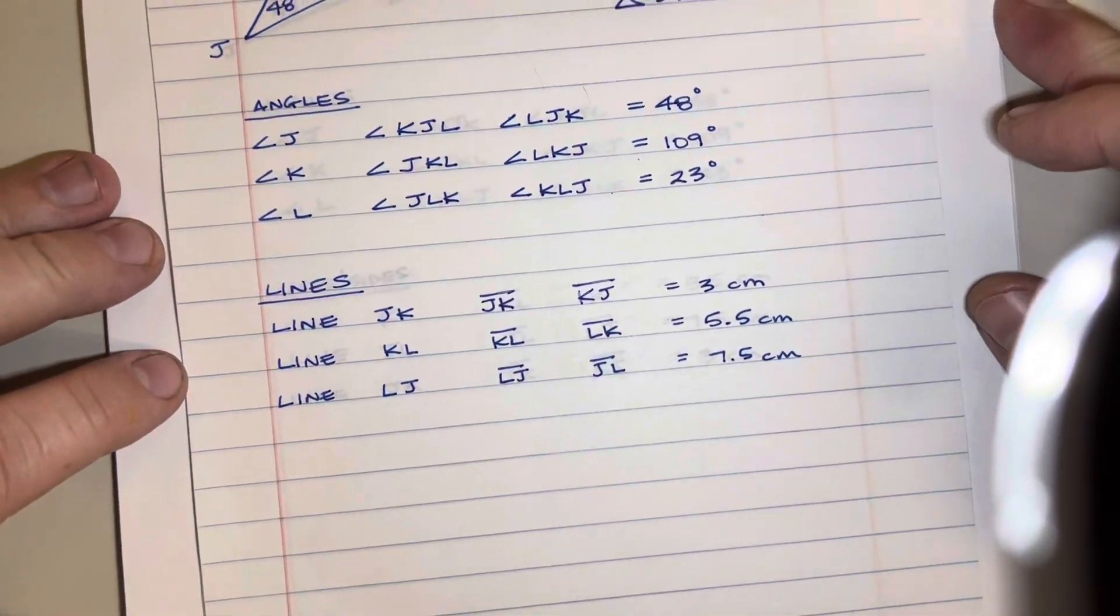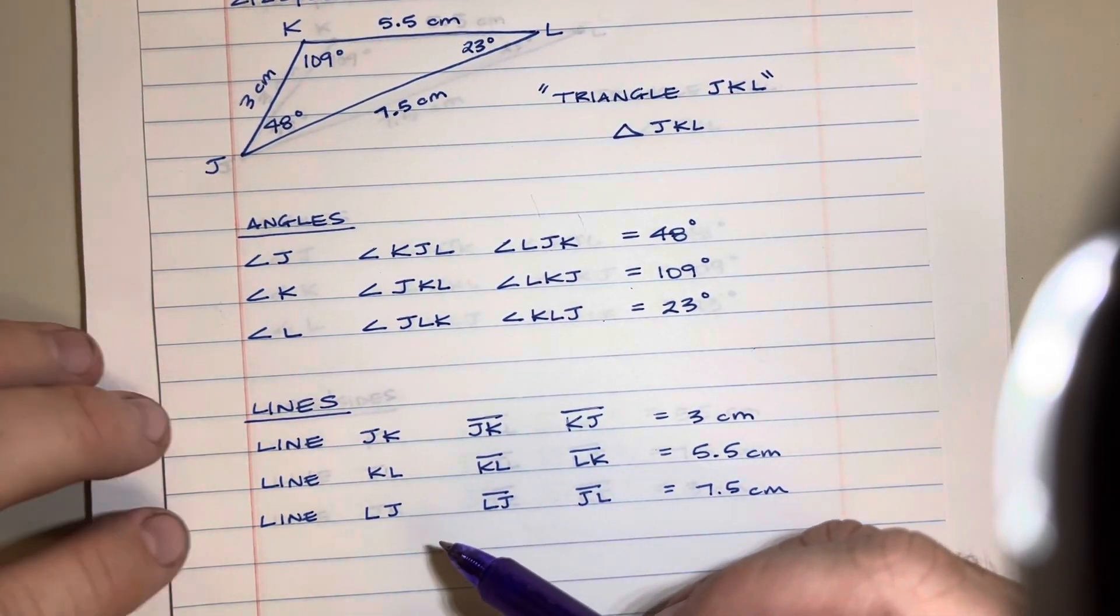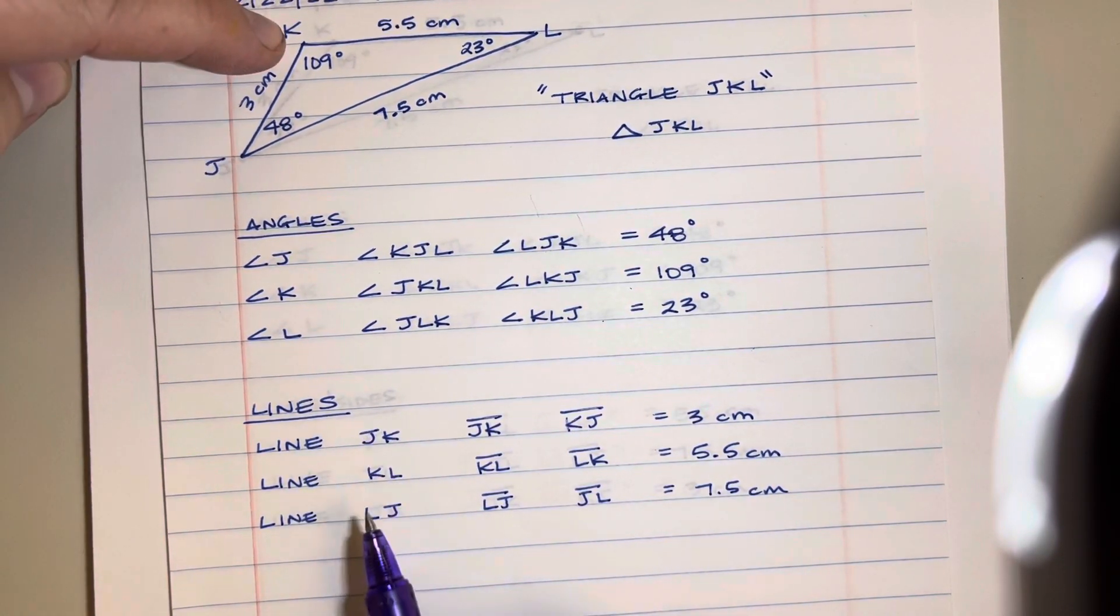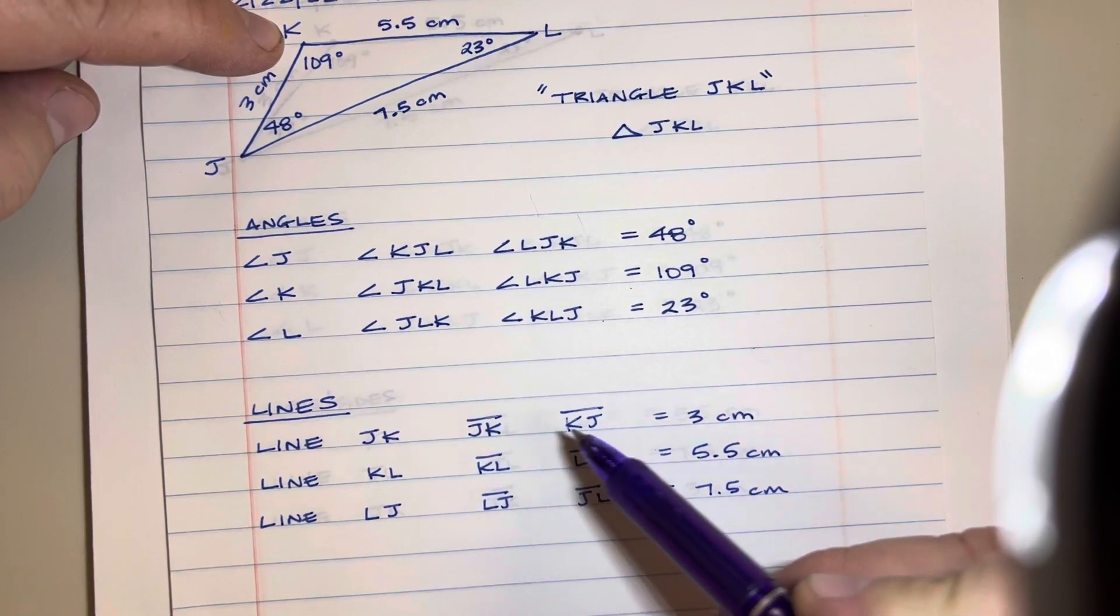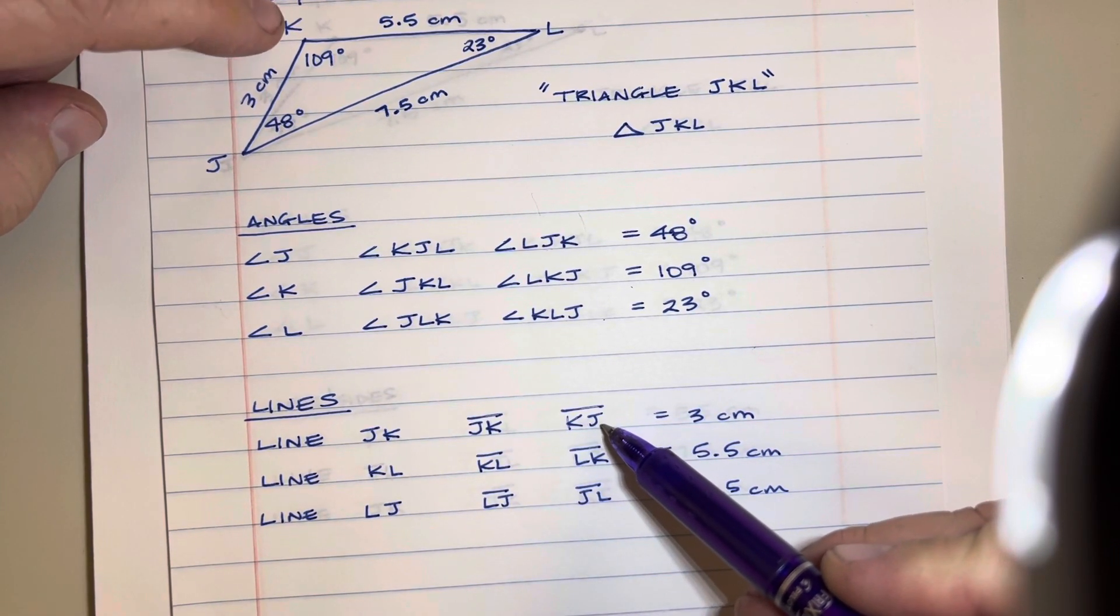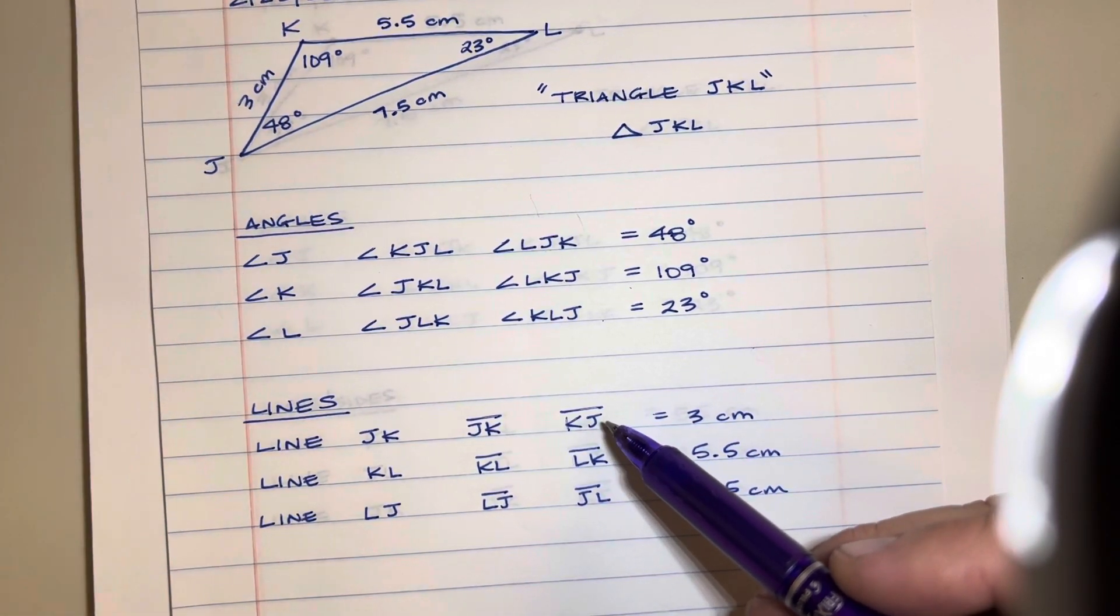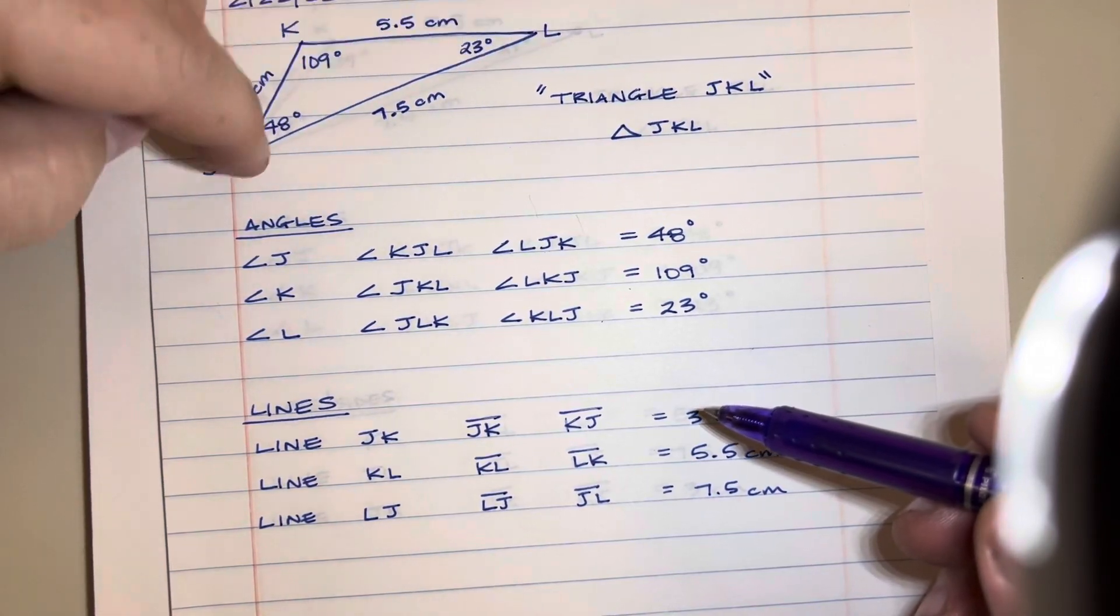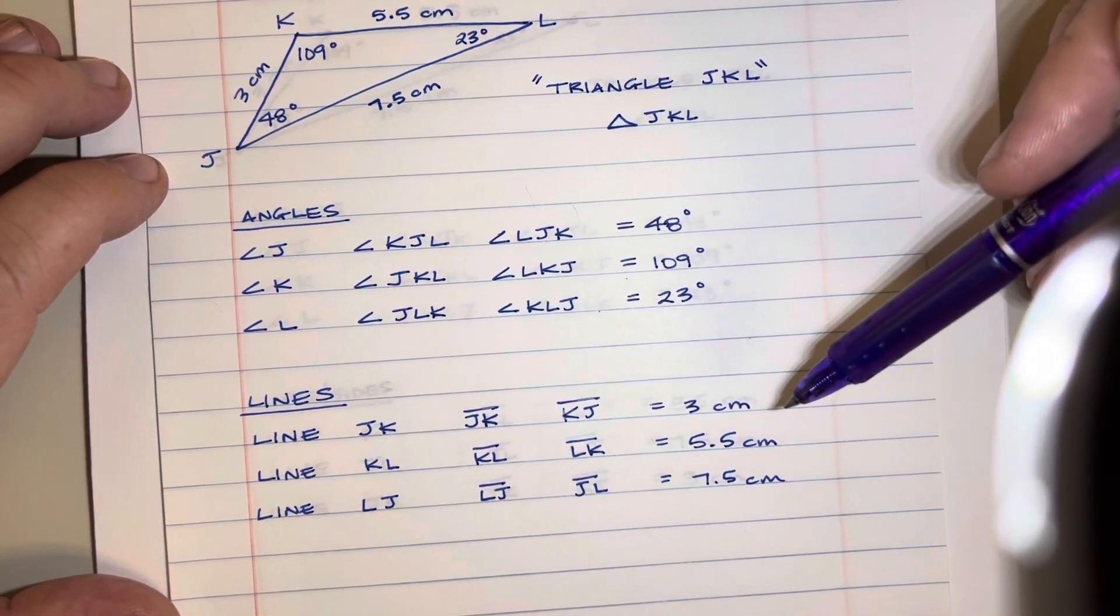Then we talked about how do we name our lines and that's pretty simple. So we talked about how line JK is just the line that goes from J to K and we can put a little line above those letters and do it like that. We can also reverse the order because from K to J is the same exact distance as from J to K. And then there's the other two lines, K to L and then L to J or J to L either one. So that's how we name angles and that's how we name lines.